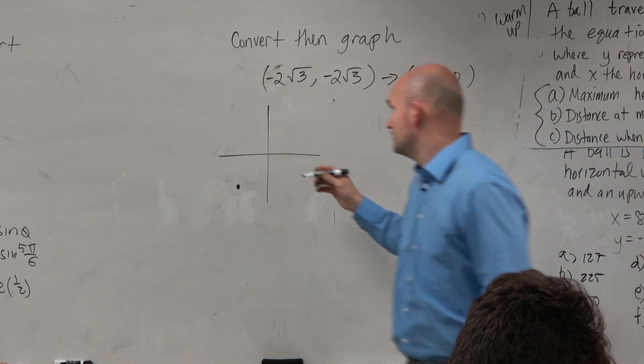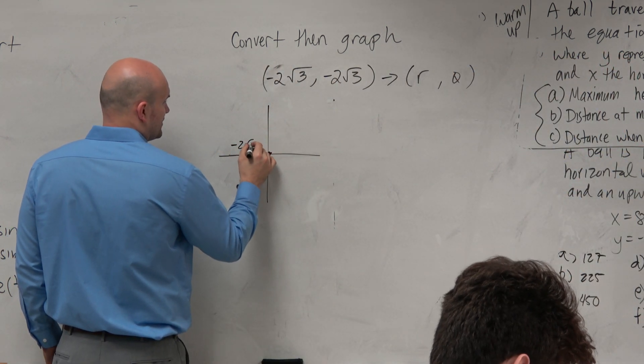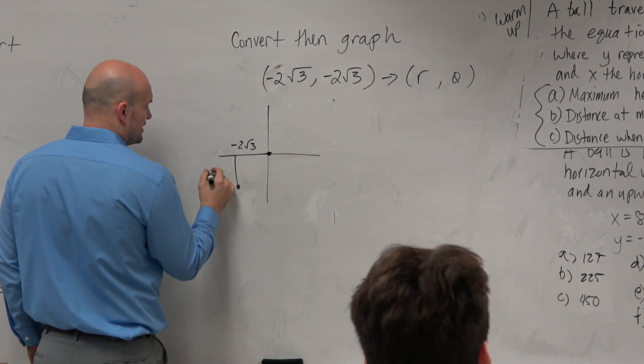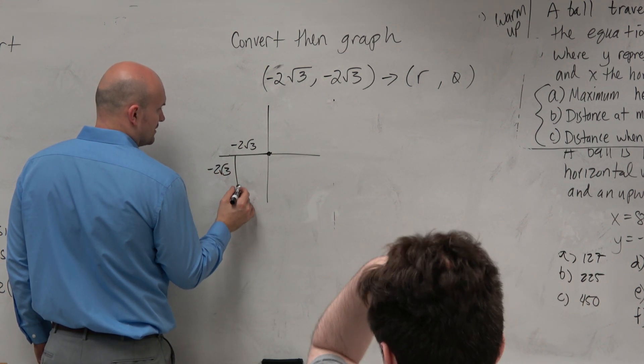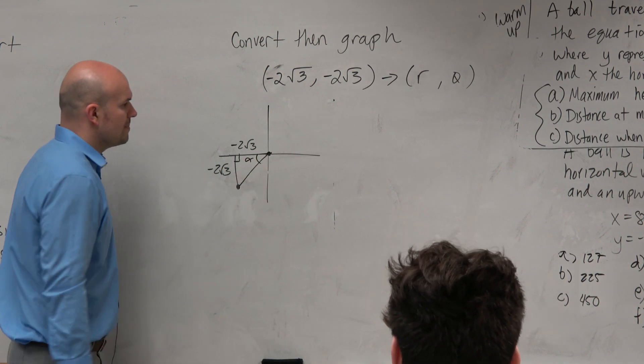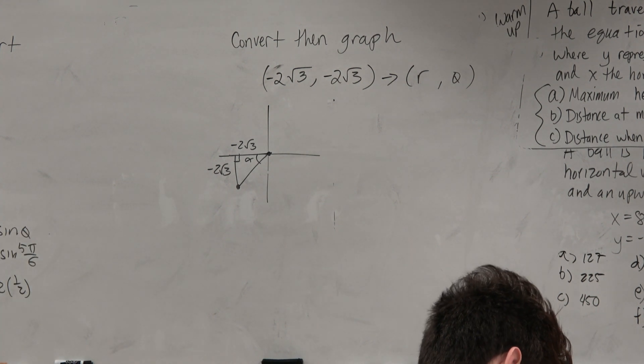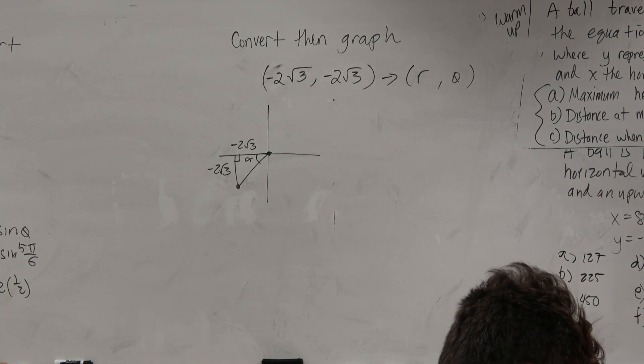So it's in the third quadrant. We know from here to here is negative 2 square root of 3, and from here to here is negative 2 square root of 3. Do I have enough information to figure out that angle and the hypotenuse of that triangle? Yes, of course I do.